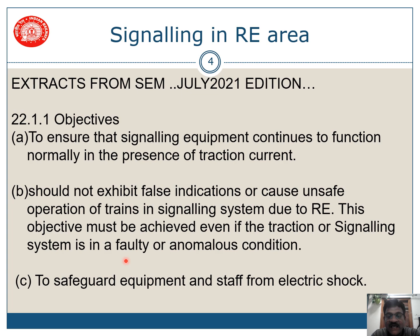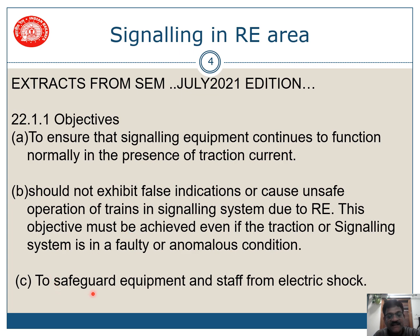This objective should be achieved even if the traction or signaling system is in a faulty or anomalous condition — meaning if there is any problem in either the signaling system or the OHE system, we should not have any problem with respect to signaling. It should not cause any untoward incident. The third objective is to safeguard the equipment and staff from electrical traction currents.